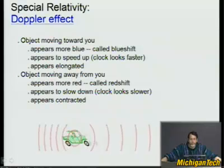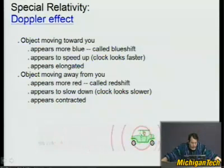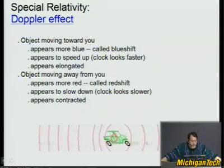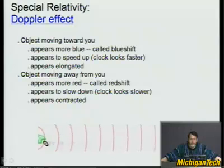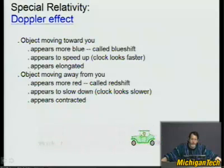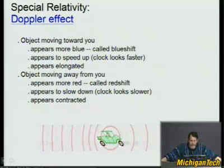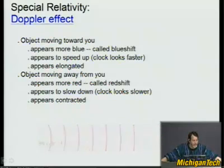It's most prominent when you start in the middle of the spectrum in green. The Doppler effect is actually dominant in what you would see in special relativity. If something moves toward you, it not only appears more blue, but it appears elongated. And when it moves away from you, it appears contracted.